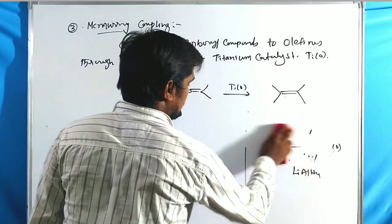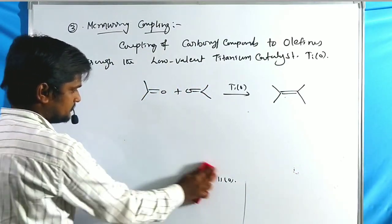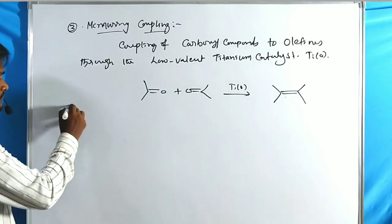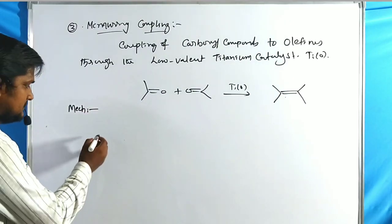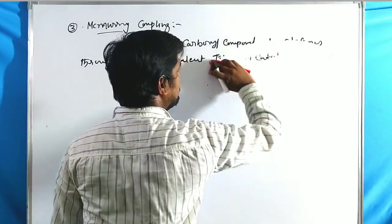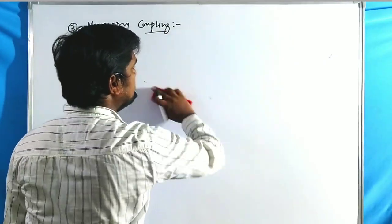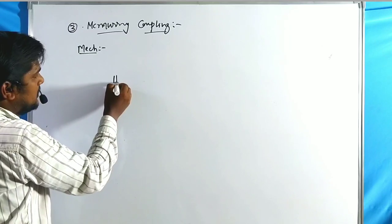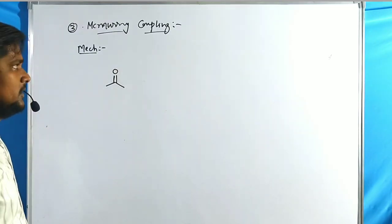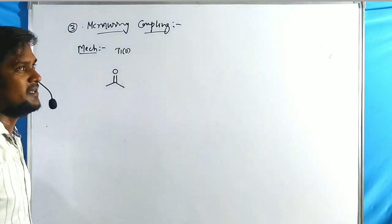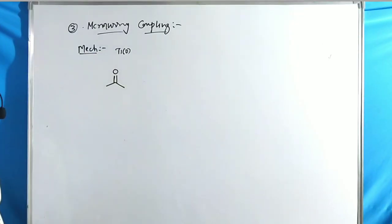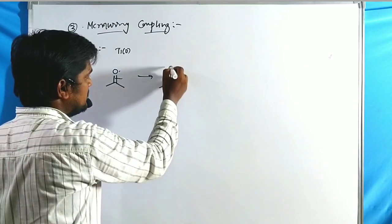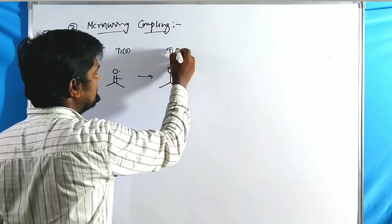Now let us go through the mechanism. A carbonyl compound is treated with titanium zero. Titanium sends electrons to the oxygen atom — one electron here, one electron there — the oxygen pairs with titanium to form the oxygen-titanium bond.